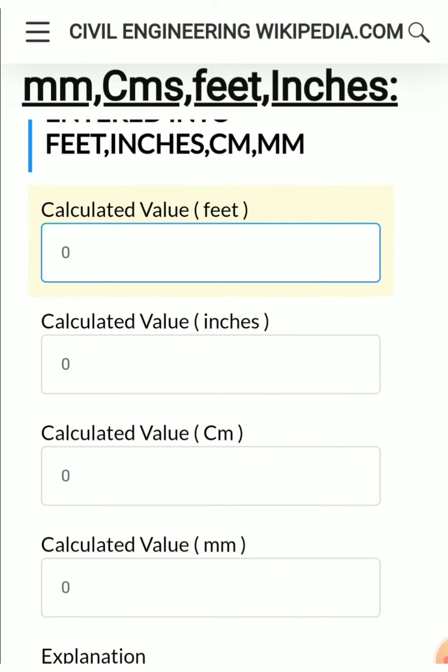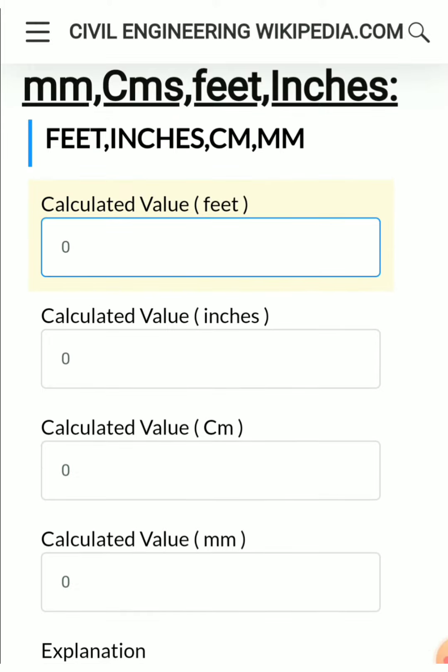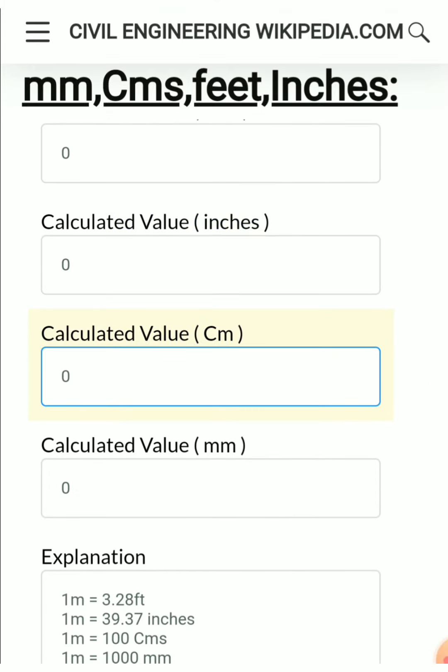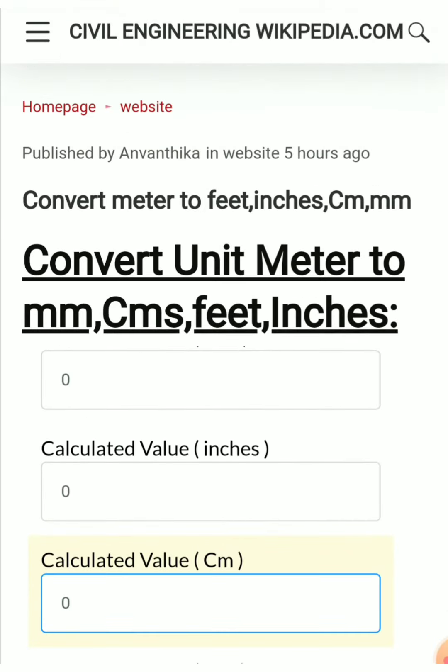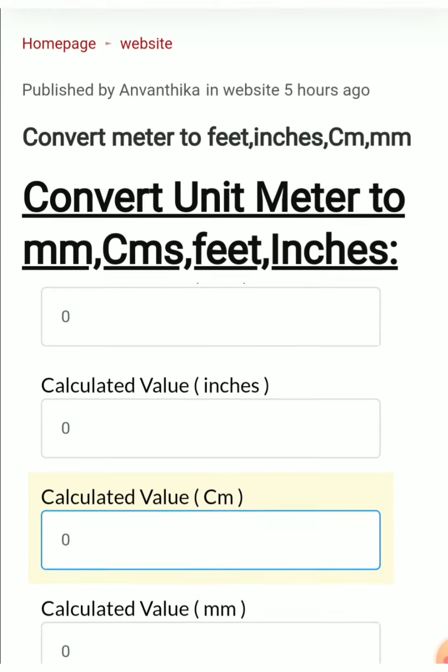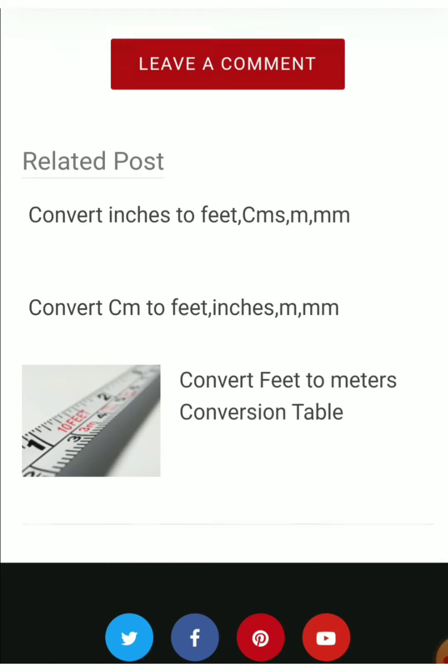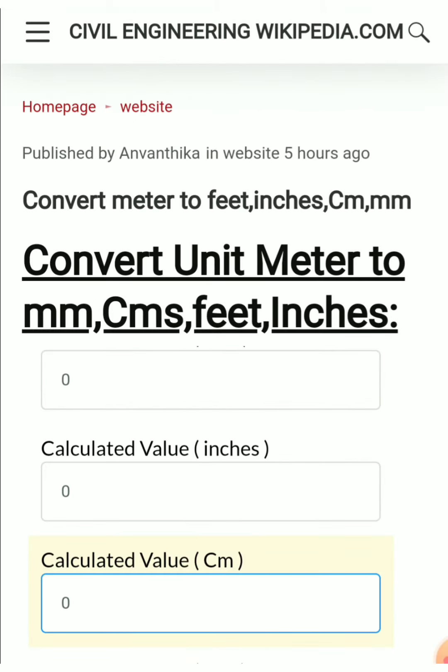you. Just type the value here, for example 24 feet, and you will get the value in inches, centimeters - all the values will appear here. The link will be given below. You can directly click and get all the answers for whatever value you have. Thanks for watching.